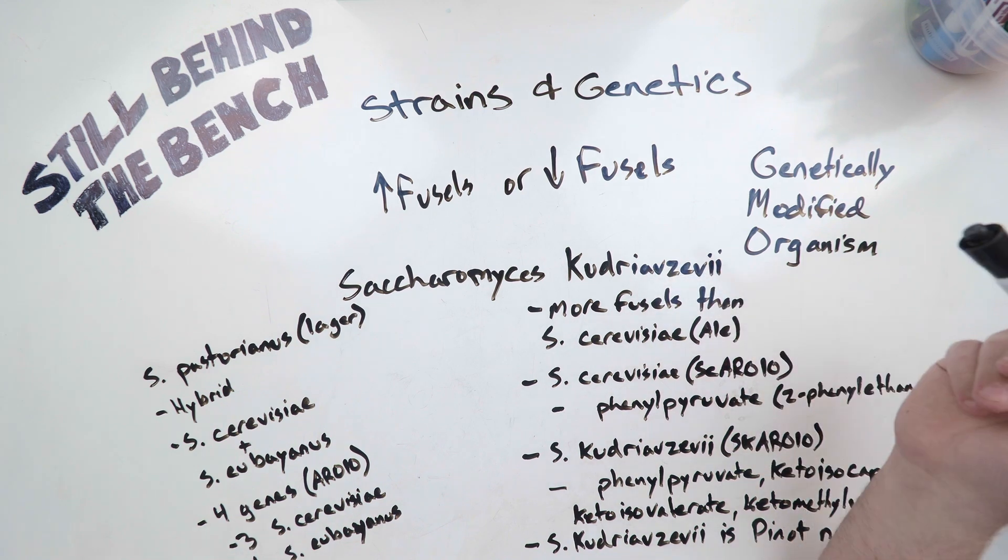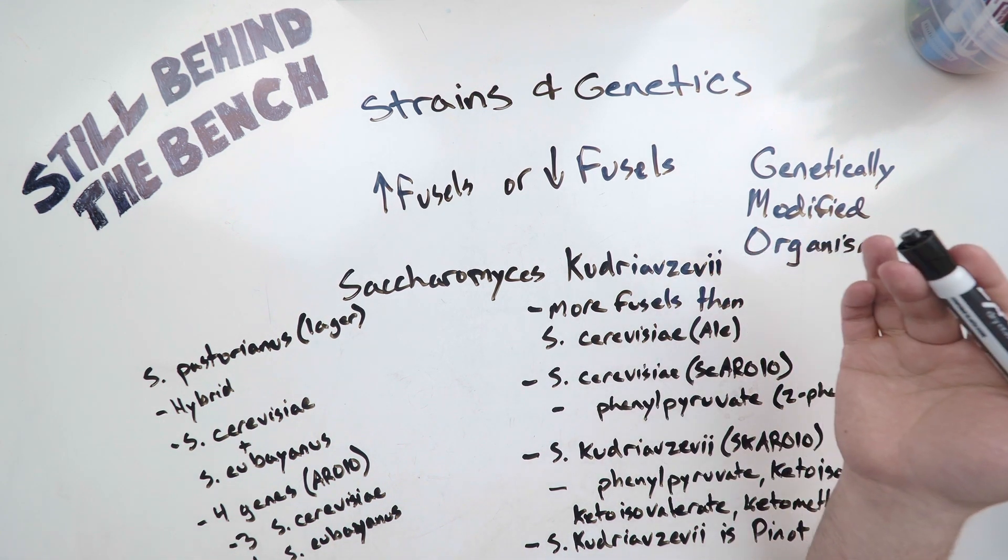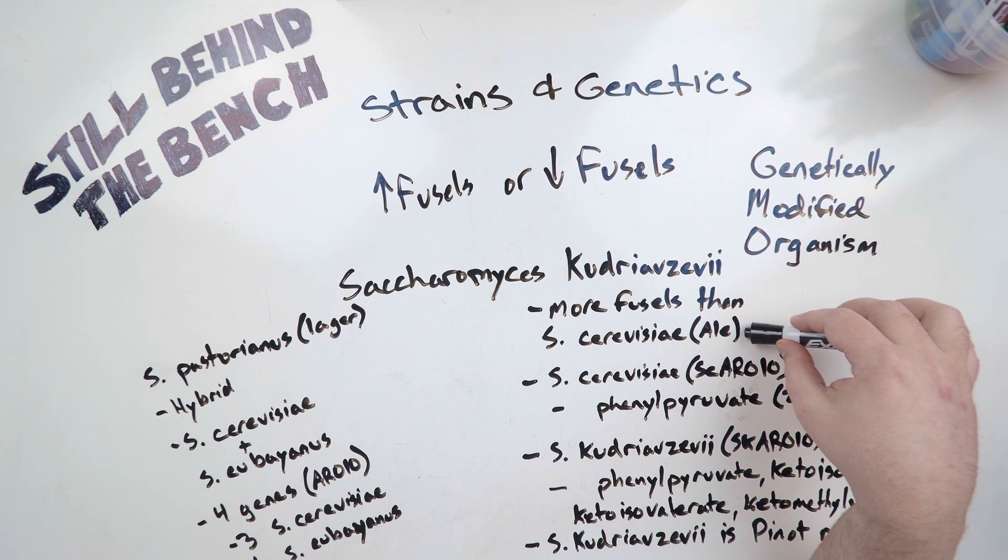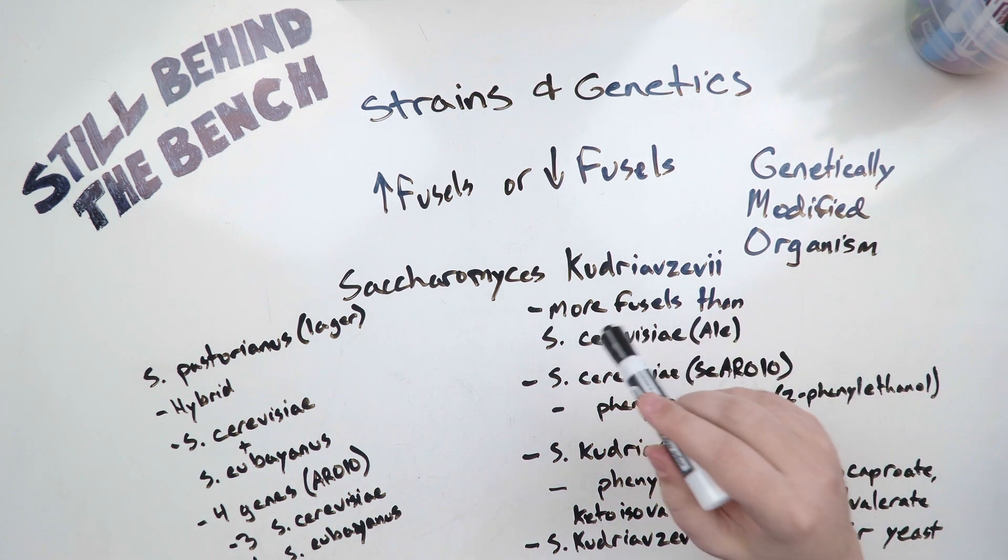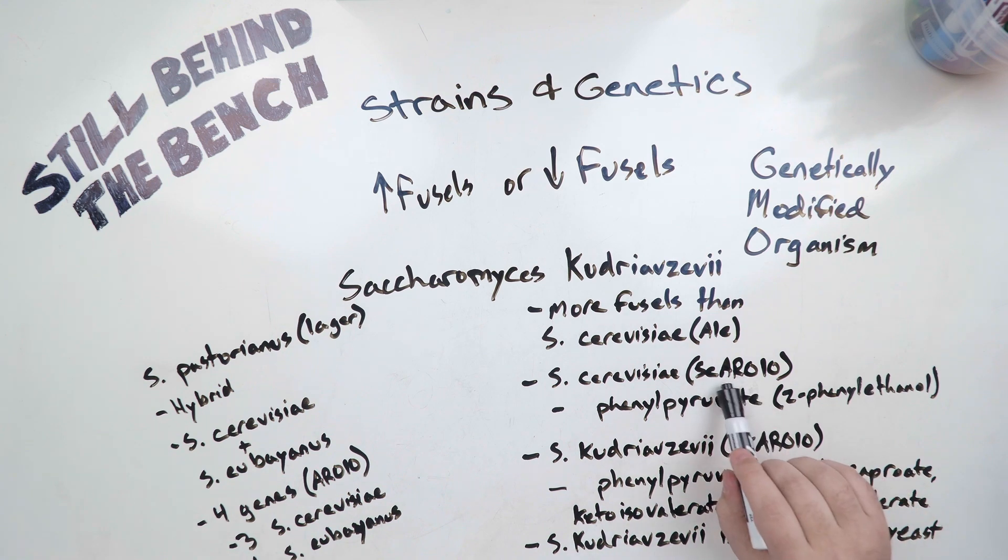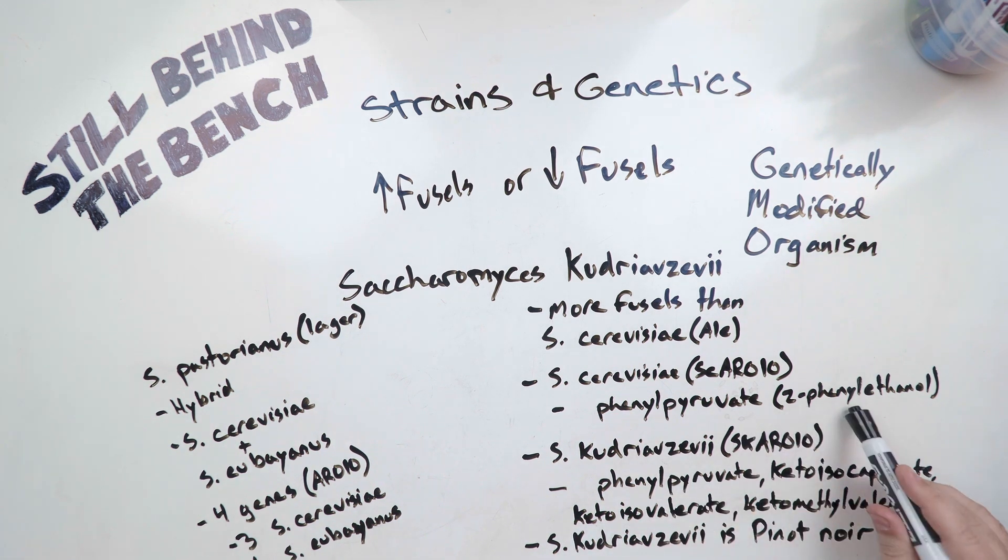So I'll give you some examples. Saccharomyces kudriavzevii - you may or may not have heard of it, it's one of the various saccharomyces species. On average it produces more fusels than Saccharomyces cerevisiae, which is your standard ale yeast. And it does this because one of the main enzymes in Saccharomyces cerevisiae, it's called ARO10, it preferentially binds to the alpha-keto acid phenylpyruvate and that ends up producing 2-phenylethanol, which is the rose floral flavor.